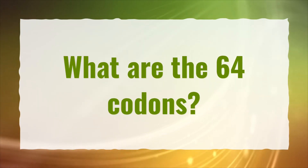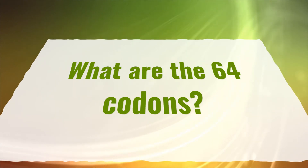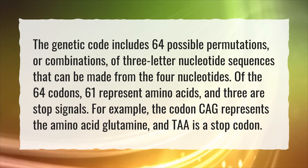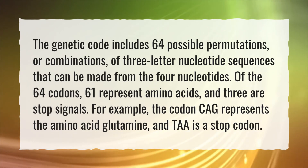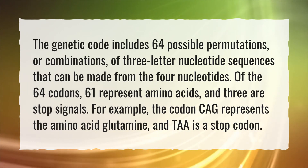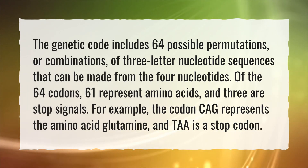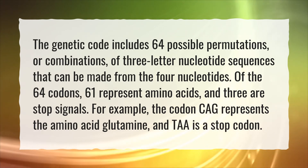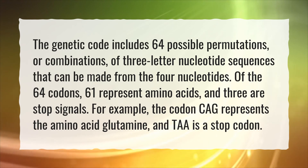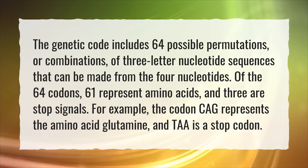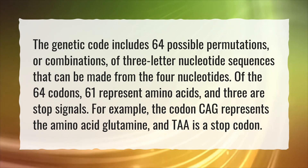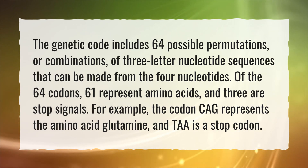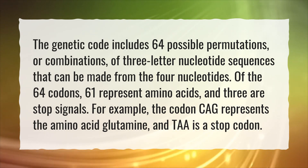What are the 64 codons? The genetic code includes 64 possible permutations, or combinations, of three-letter nucleotide sequences that can be made from the four nucleotides. Of the 64 codons, 61 represent amino acids and three are stop signals. For example, the codon CAG represents the amino acid glutamine, and TAA is a stop codon.